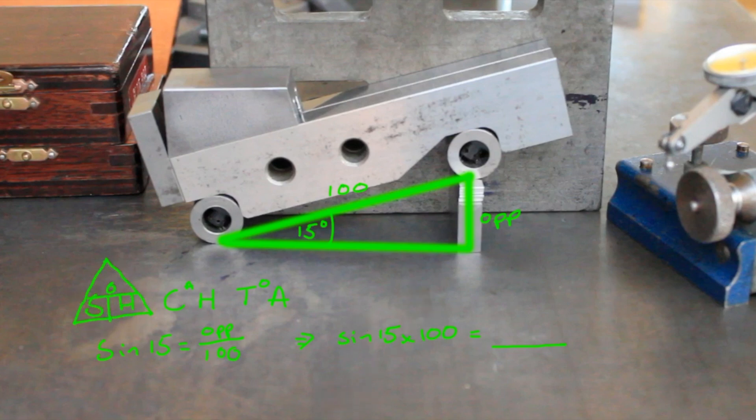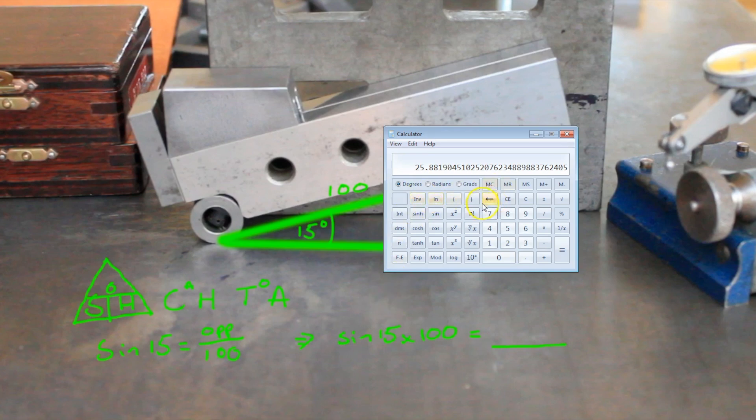So let's chuck that into a calculator, and there we have it: sine 15 times 100 gives us 25.8819. Our slips will measure to the thousandth, so we're going to use 25.882.